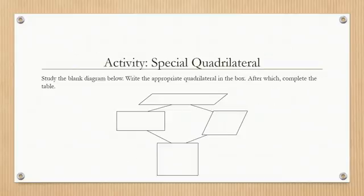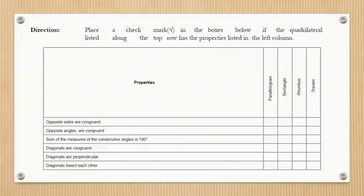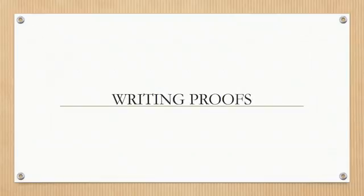Here is a practice activity called Special Quadrilateral. Study the blank diagrams below and write the appropriate quadrilateral in the box, then complete the table. Place a checkmark in the boxes if the quadrilateral listed along the top row has the properties listed in the left column. Here we will be discussing and writing proofs.